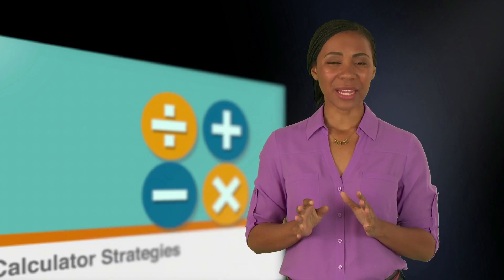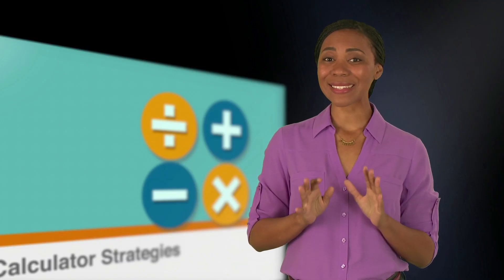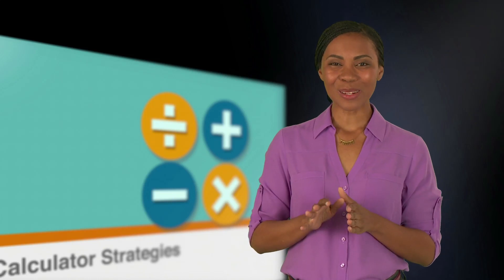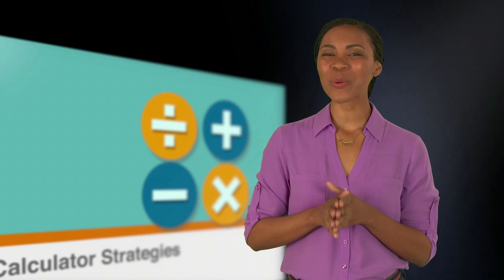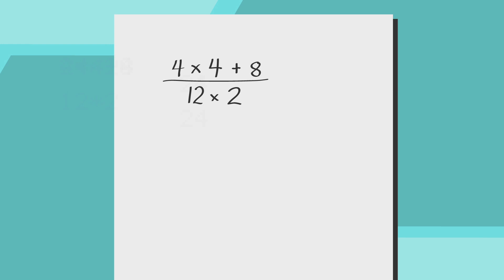Even if you use your calculator for every question, things can still go wrong. Let's look at some common mistakes, starting with fractions. Let's say that you have this problem: 4 times 4 plus 8, all over 12 times 2.